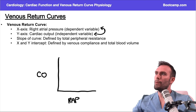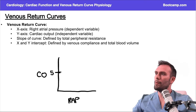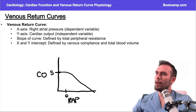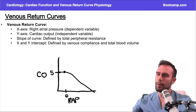I'm measuring right atrial pressure by changing the cardiac output. With a cardiac output of five and right atrial pressure at zero, I'll generate a curve that looks something like this. This is your standard venous return curve. At a right atrial pressure of zero, cardiac output is five — nothing has really changed from that aspect compared to the last curve. That's our baseline target point.